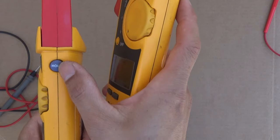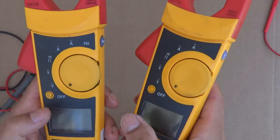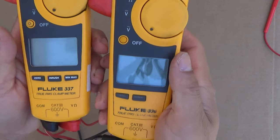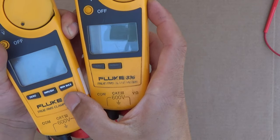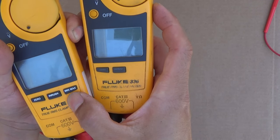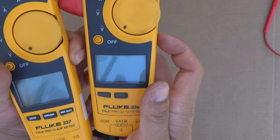There is a hold button on the side, there is a backlight button. The 337 also has an extra minimum and max button. But other than that, they are pretty much the same.